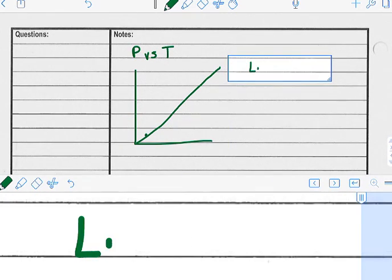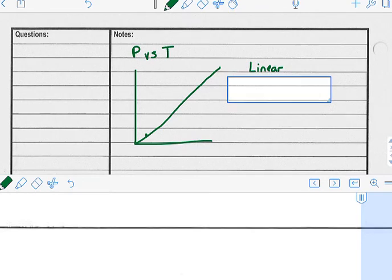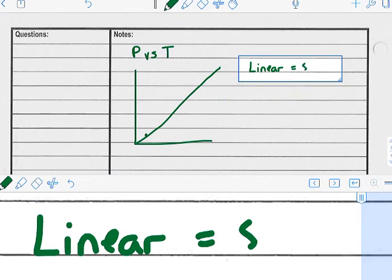So this is also a linear relationship. There are actually three relationships that you had to find. Linear again means they change in the same way.